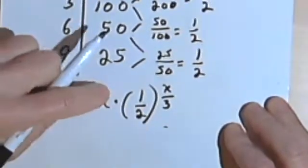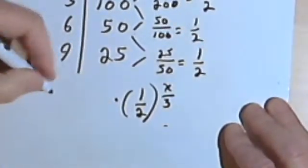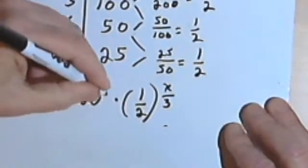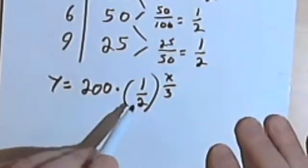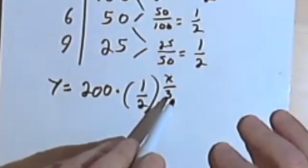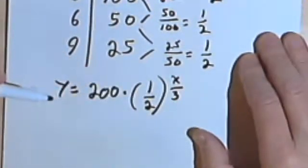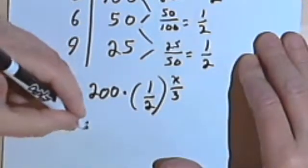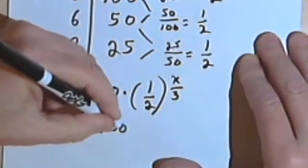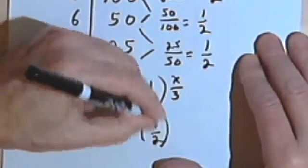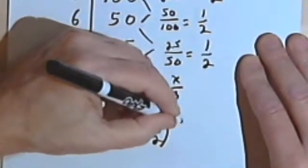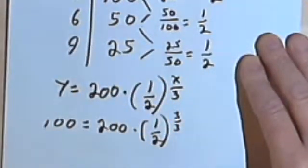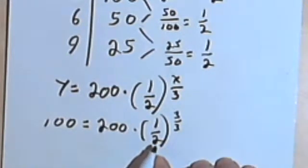Okay, let's put that in and check it with some other numbers. So y equals 200 times the fraction one-half raised to the x over 3. That should be my specific formula, my specific equation. Let's try it with 3 and 100. So 100 equals 200 times one-half raised to the 3 over 3. 3 over 3 is 1. One-half times 200 is 100. So that works.